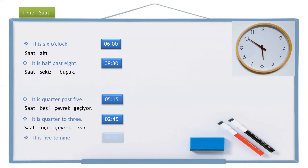And the last example: it is five to nine. Again, it is not passing, so we use var. It is: saat, five — beş, nine — dokuz, nine takes the dative suffix — dokuza, beş var. There are five minutes to nine. In English: it is five to nine. In Turkish: saat dokuza beş var.